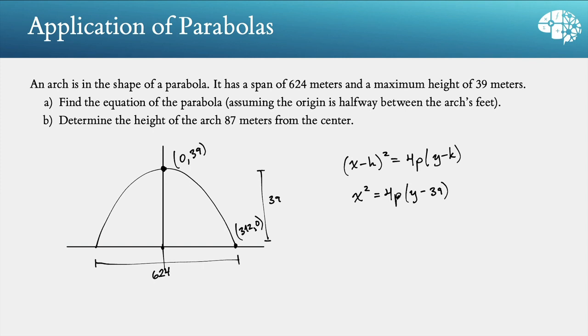And now to find this unknown value, p, we can use any other point. And we have this point here, 312 comma 0. So if we plug that in, we have 312 squared equals 4p times 0 minus 39. And since the equation has 4p in it, I'm just going to solve for 4p here. So I've got the 312 squared. We're going to divide by negative 39. And that will be the 4p that I need to plug into that spot there in the calculator.